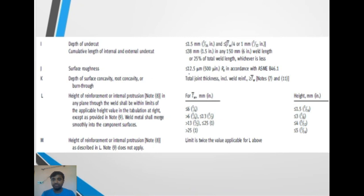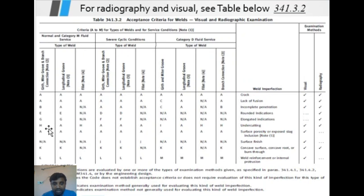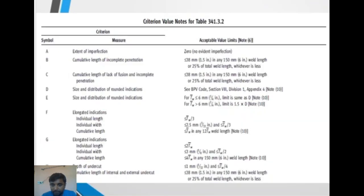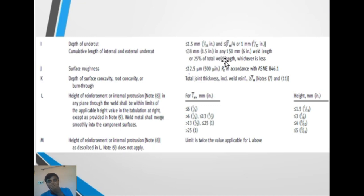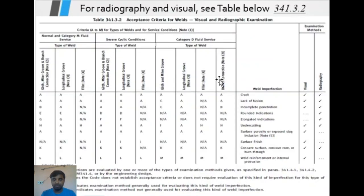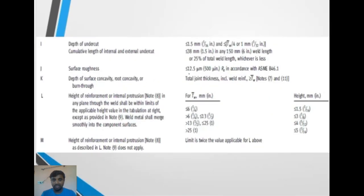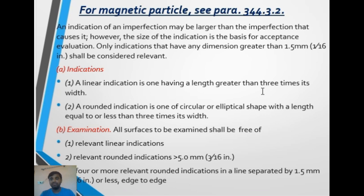Symbol H applies to normal and Category M fluid service for undercut depth, and symbol I applies to Category D fluid service. For H: depth less than or equal to 1 mm acceptable. For I: depth less than or equal to 1.5 mm acceptable. Cumulative length of internal and external undercut is 38 mm in 150 mm weld length. These criteria run from symbols I through M in the table.